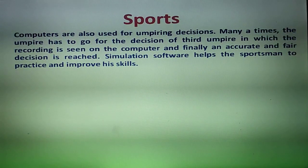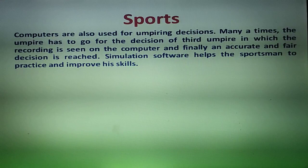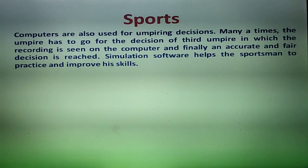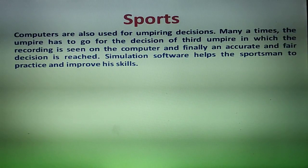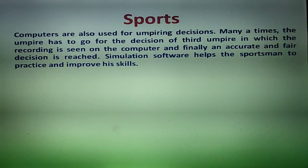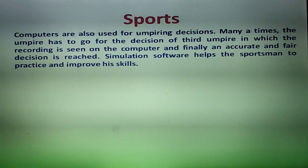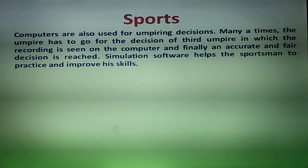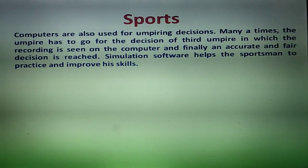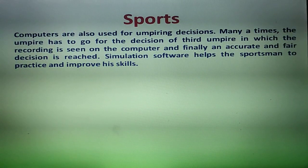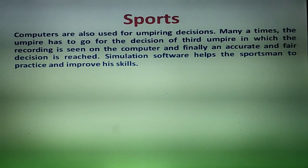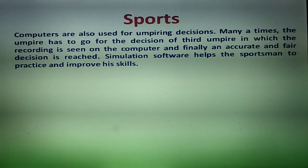In the sports field, computers are also used. In cricket matches, volleyball matches, and other sports, all types of decisions use advanced technology. Computers are used for umpiring decisions. When an umpire has to refer to the third umpire, the recording is viewed on the computer and an accurate, fair decision is reached. Computers play a very important role in sports.